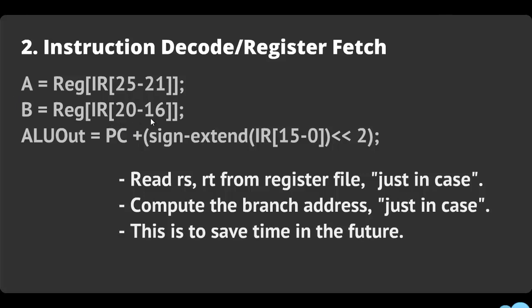Then it takes RT through the register file and stores it in B. So now you've fetched the registers from the register file and put them in these temporary registers. The next thing it does is compute the branch address — this is done just in case, because the instruction may not be a branch, but you do it anyway to save time and it doesn't hurt anything.